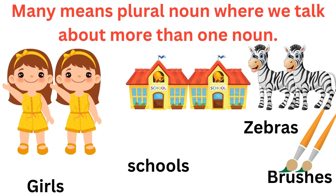Now many means plural nouns. Plural nouns means jo one se zyada hota hai, unko hum plural nouns bolte hai. Like two, three, four, hundred, thousand, seven, eight — jo ek se zyada hota hai, unko plural nouns bolte hai. Like, how many girls are here? Two girls — they are plural in number. Two schools, plural in number. Two zebras, also plural in number. Same goes with the brushes — two brushes, plural in number. So plural means more than one.